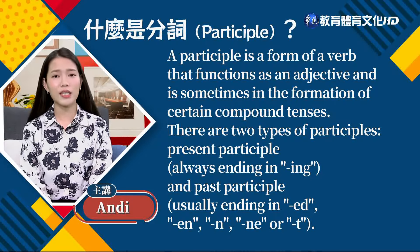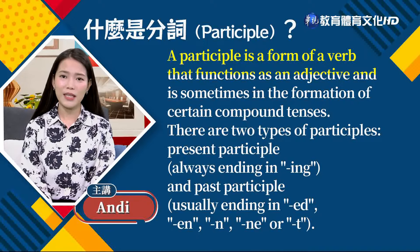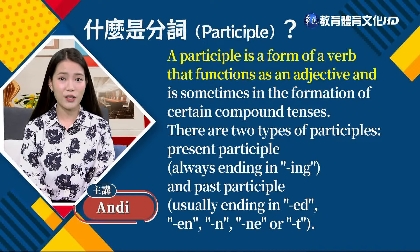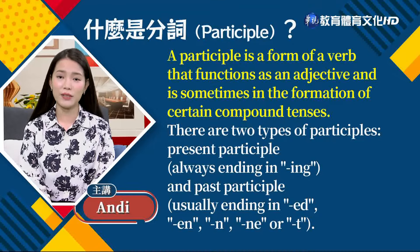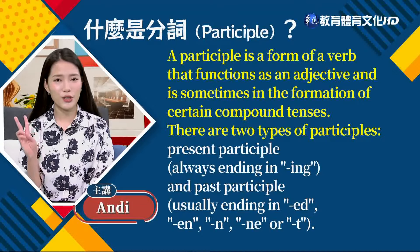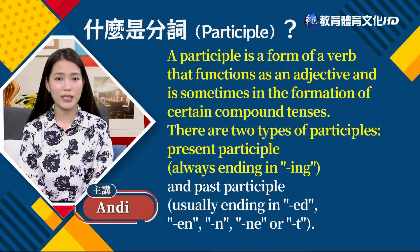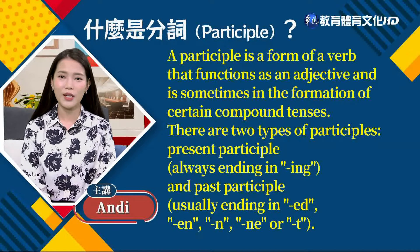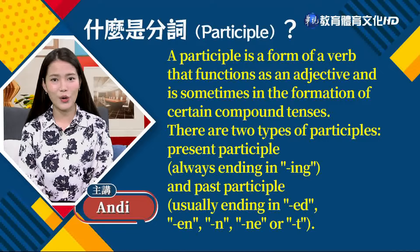接著我們就進入正題了，到底什麼是分詞呢？A participle is a form of verb that functions as an adjective, and is sometimes used in the formation of certain compound tenses. There are two types of participles: present participle, always ending in -ing, and past participle, usually ending in -ed, -en, -n, -ne, or -t.